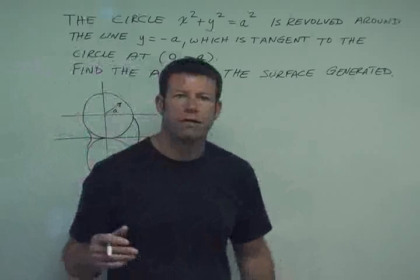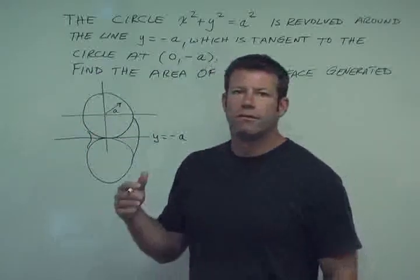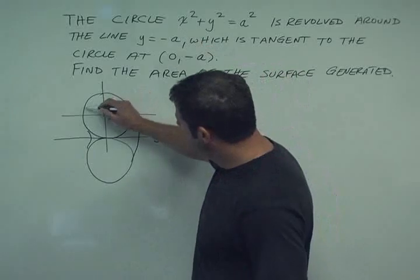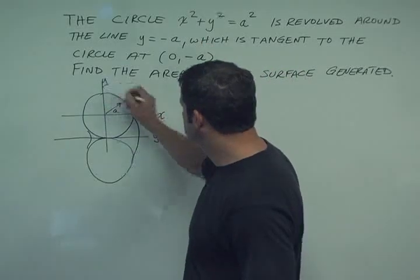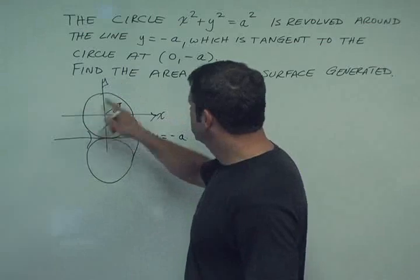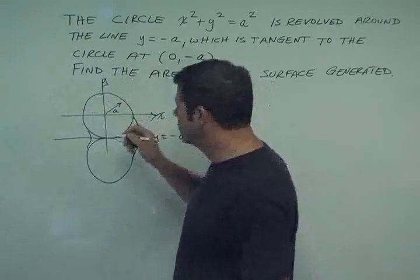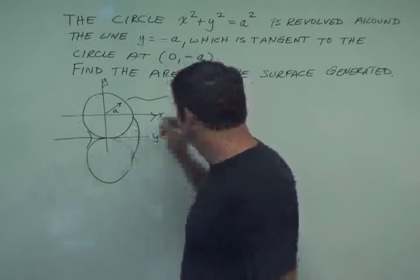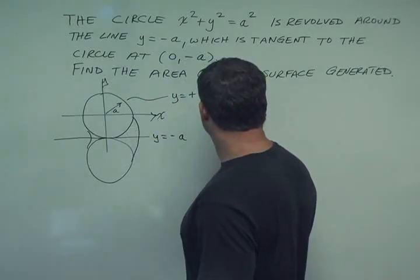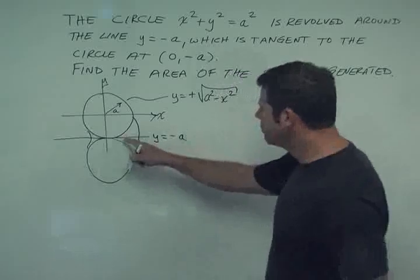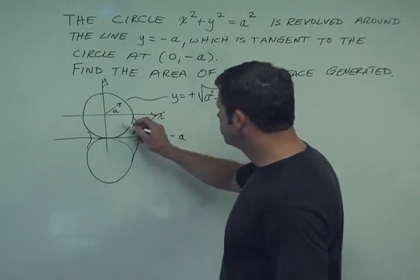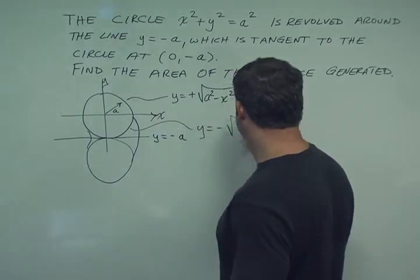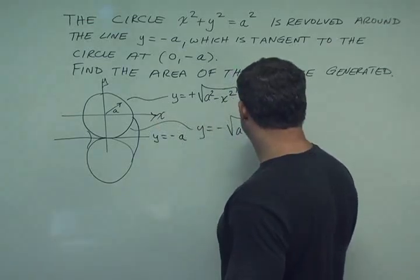And further, when we deal with these equations for circles, we always have that plus or minus issue, which can be somewhat of a pain. Now, the first thing I would do is look at this from the standpoint of solving this equation for y. The height y above the x-axis is the square root of a squared minus x squared. So y is plus the square root of a squared minus x squared, and down here the y value would be minus the square root of a squared minus x squared.